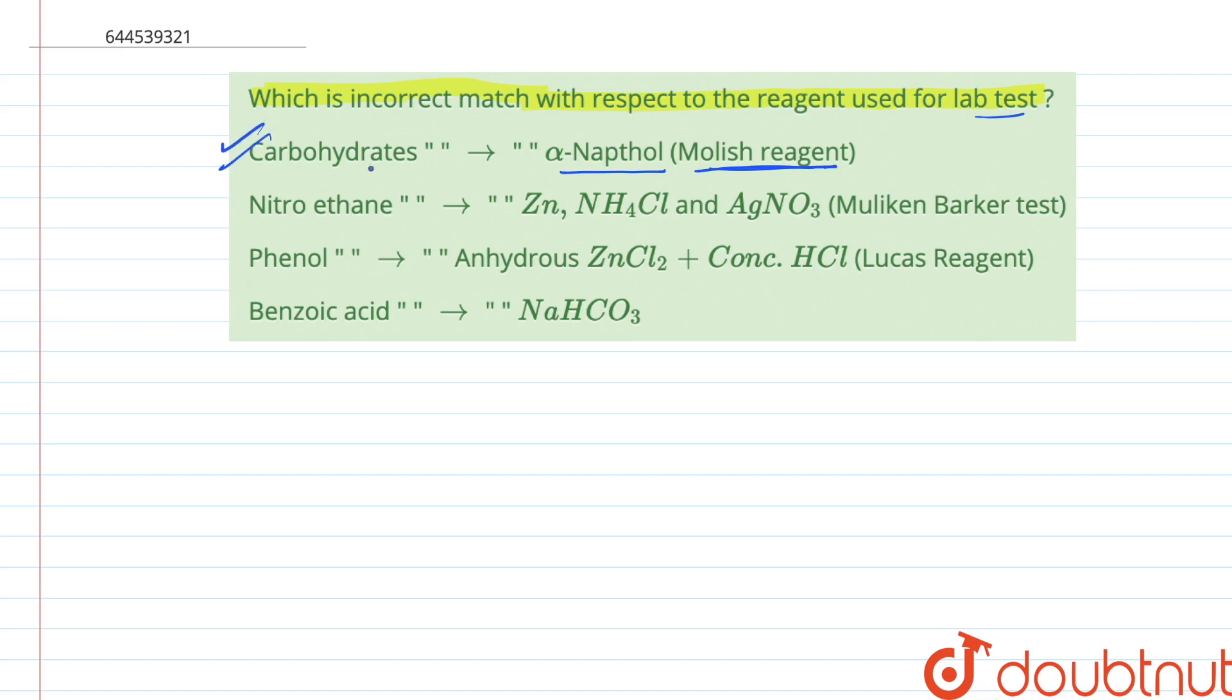Second, if we look into the second option, nitro ethane is tested by Zn, NH4Cl and AgNO3, that is a Malkin Barker test. This is also true since we know about it that nitro ethane when is treated with Malkin Barker test it shows positive test, so therefore this is the correct option.